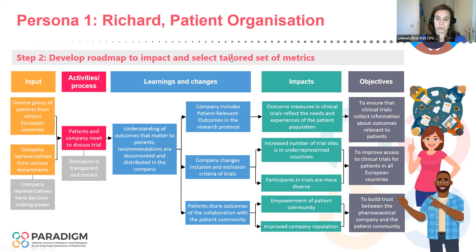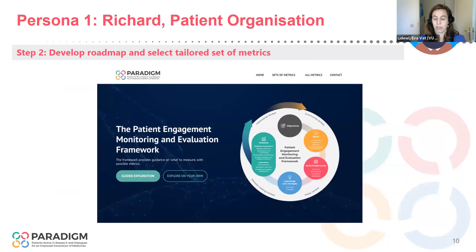There are a few other factors to take into account because when you are doing patient engagement, you're not doing that in isolation. You're part of a context and environment that may influence success. For example, one of the factors you may need to take into account is the decision-making power that the people involved have, but also whether the discussion is transparent and honest — and other factors that may be out of your control. The framework helps you to understand what you could measure, what you could consider as impacts, and then guides you with example questions and methods.